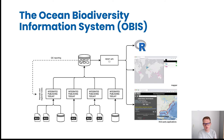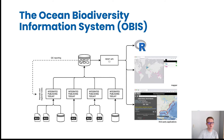This is a very high level overview of how the OBIS network operates. Each of our regional and thematic nodes will have an Integrated Publishing Toolkit or IPT server where they can upload data from a variety of sources and align it with our data standards. We then ingest the data from all these IPT servers into our central database and make it available using our web services, which drive the portal, the mapper, the R package and so on.